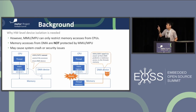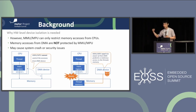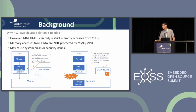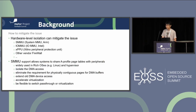However, the MMU or MPU can only restrict memory accesses from CPUs. Memory accesses from DMA devices are not protected by the MMU or MPU. If a DMA device encounters a bug or is malicious and wants to clear another thread's memory, the MMU or MPU helps nothing. Thus the protection provided by MMU or MPU does not apply to DMA devices. This tells us we need another approach to restrict DMA devices.